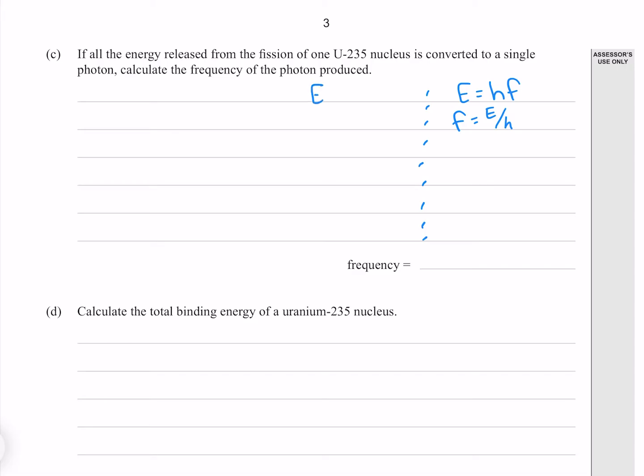To find the energy, we can use E equals mc squared, where E is the energy released, and m is the change in mass, which we need to find.